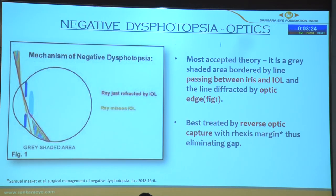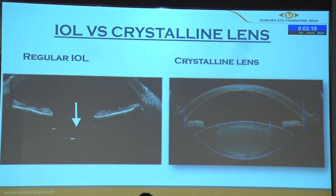So why does this happen? Coming to the physiology, we can see two rays: one ray passing between the optic and the iris, and the second ray refracting at the optic edge. This shadow is perceived as a temporal crescent shadow. In the normal crystalline lens there is no space between the iris and the crystalline lens, but with an IOL there is a lot of space, which is one of the reasons for negative dysphotopsia.